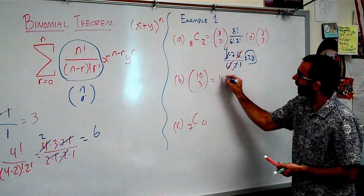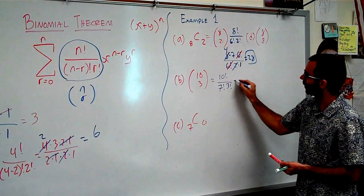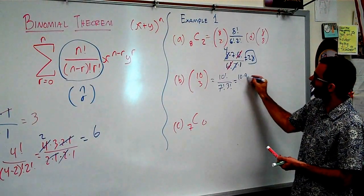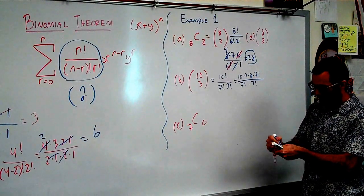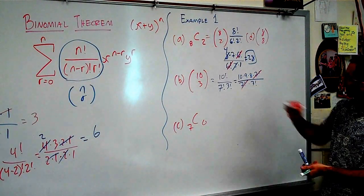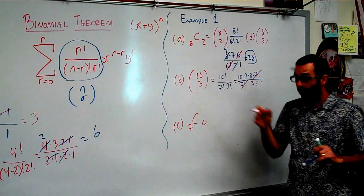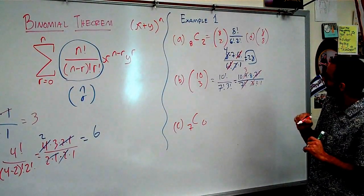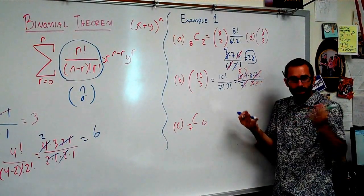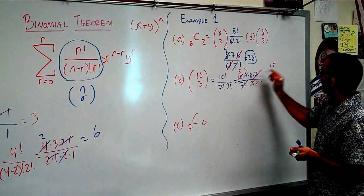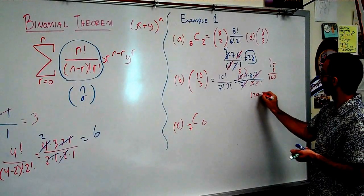And then 10 choose 3: 10 factorial over 10 minus 3, so 7 factorial over 3 factorial. I know that these are going to cross out, so 10 times 9 times 8 times 7 factorial over 7 factorial times 3 factorial. Those go out right there. 3 factorial is 3 times 2 times 1. Three can go into 9 three times, two can go into 10 five times. So we get 15 times 8, which is 120.